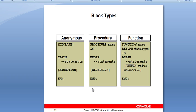Now we will look at the types of blocks. There are two types of blocks: anonymous blocks and named blocks. An anonymous block is written for performing a temporary operation and is not saved with a name. A named block is given a specific name — procedures and functions are named blocks. An anonymous block has no particular name and is written for performing specific temporary operations such as insert, update, or delete.